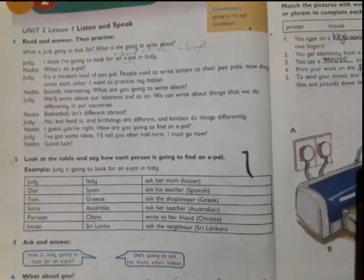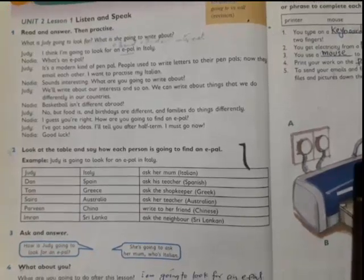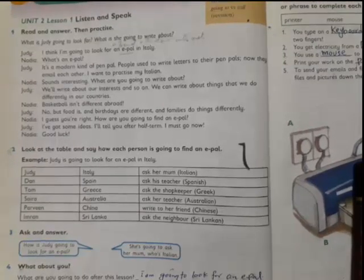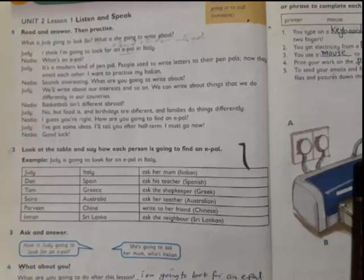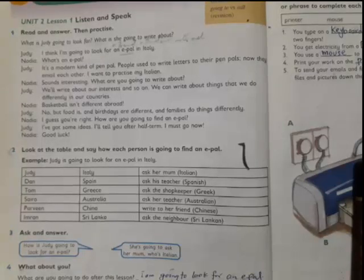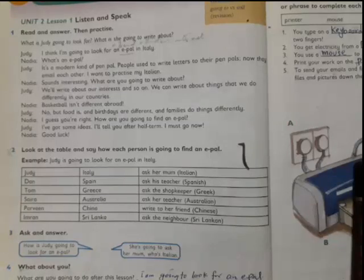I will give you the answer at the end of the lesson, so I'm going to read the lesson first. It is a kind of conversation between two girls, Judy and Nadia. Judy says: I think I'm going to look for an e-pal in Italy. Nadia asks: What's an e-pal Judy? Judy says it is a modern kind of pen pal.